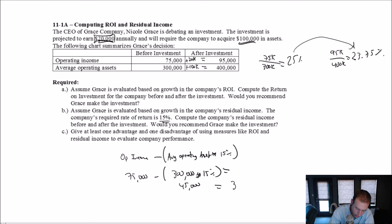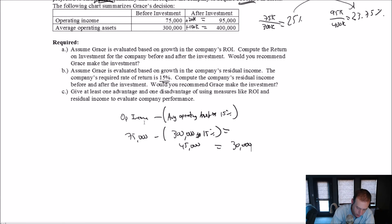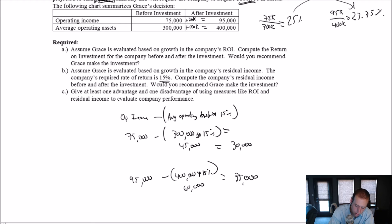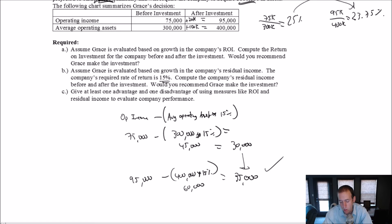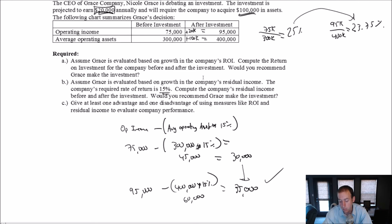So $75,000 minus $45,000 is $30,000 — that's the residual income before the deal. Now the residual income after: $95,000 minus $400,000 times 15%. $400,000 times 15% is $60,000. So $95,000 minus $60,000 is $35,000. Using residual income, her residual income would have increased from $30,000 to $35,000. If residual income is going up, you take the deal. In this case, she should take the deal if residual income is being used to measure her.